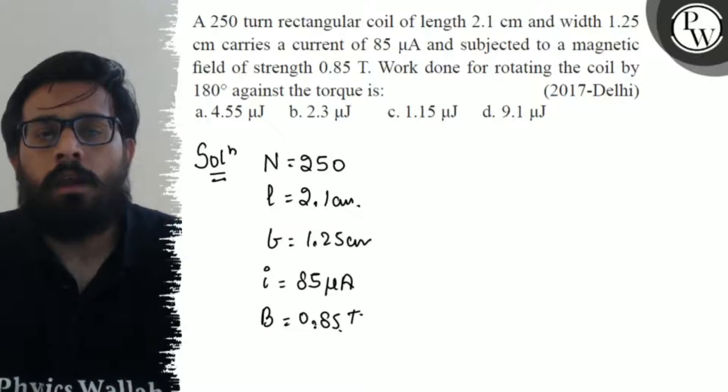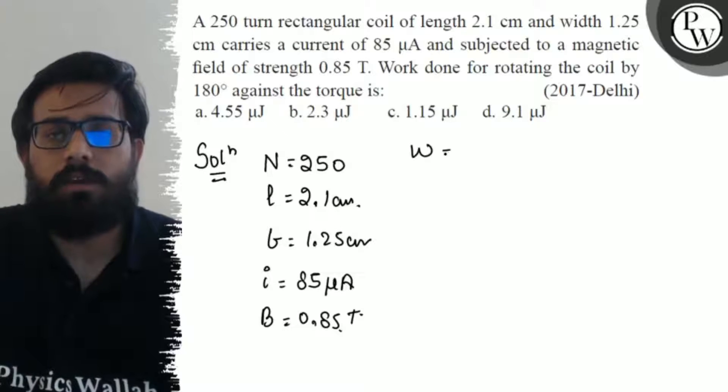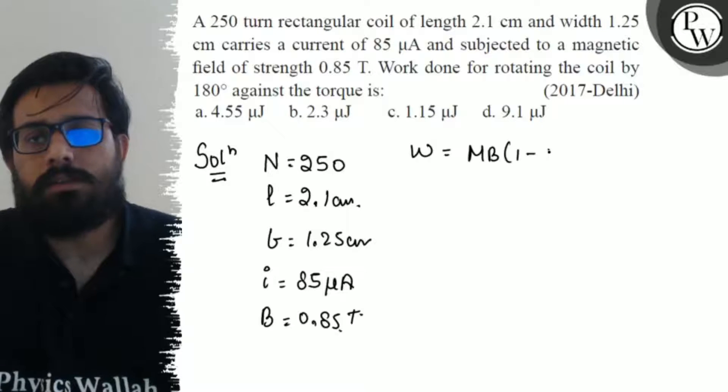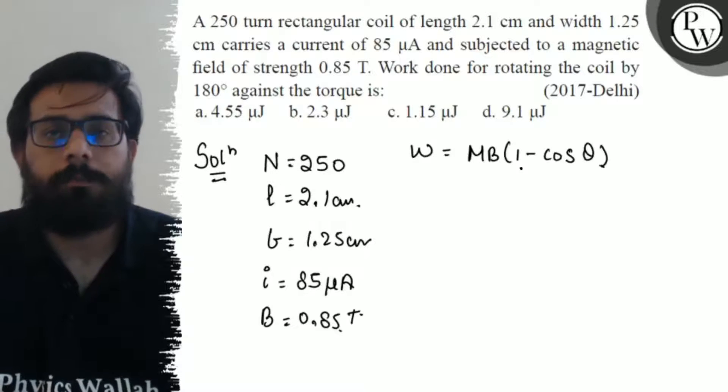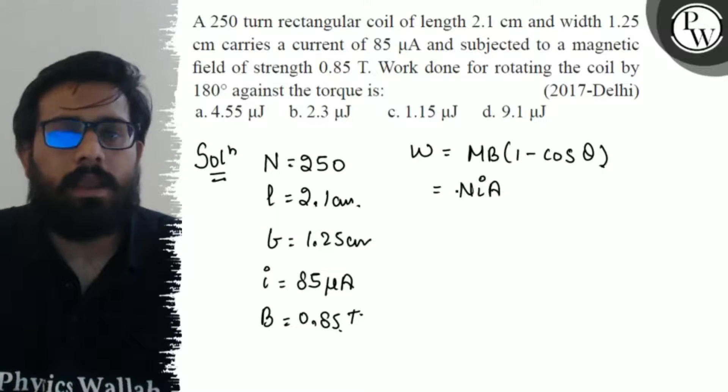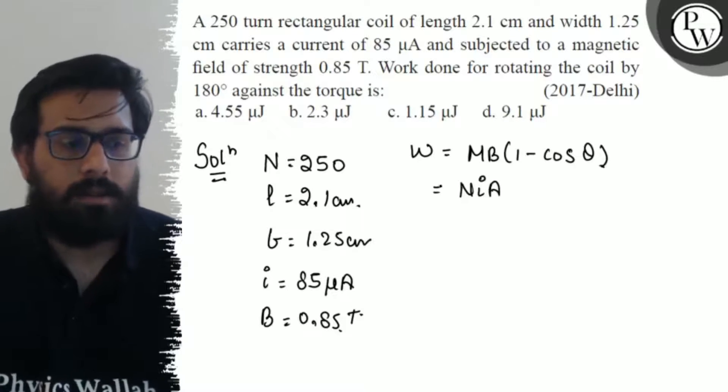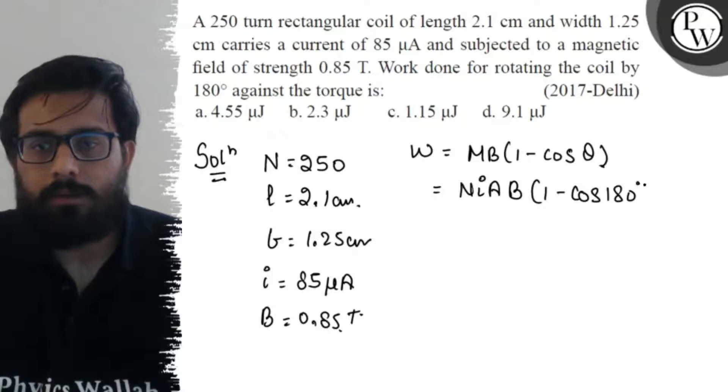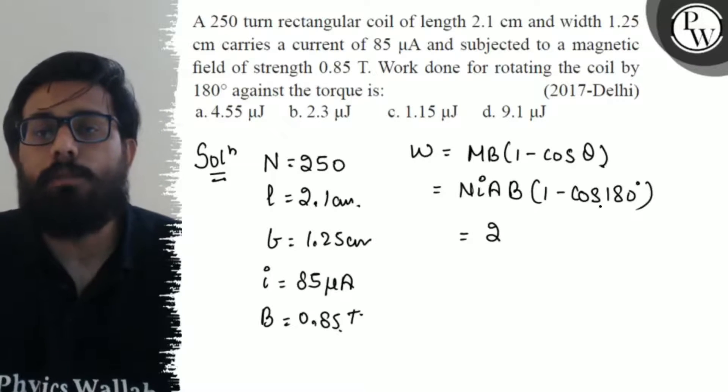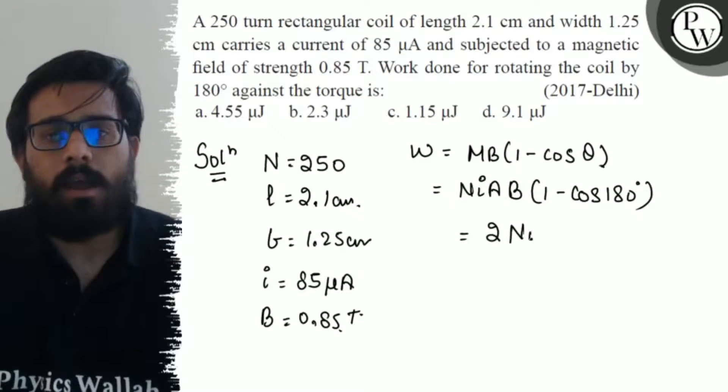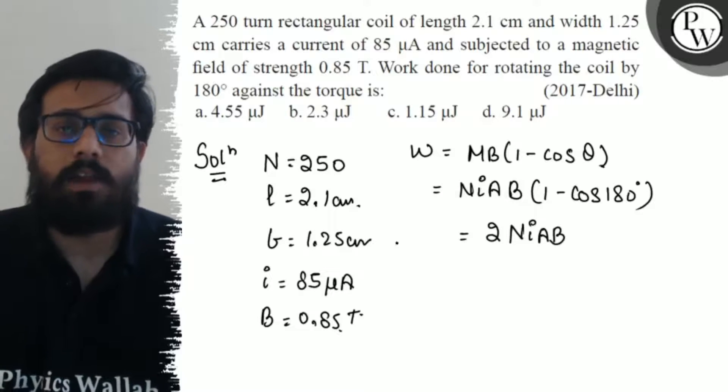Now we have to find out the work done. We know that it can be written as W equals NIAB times (1 minus cos 180 degrees). Since cos 180 degrees equals negative 1, this comes out to be W equals 2NIAB as the value of work done.